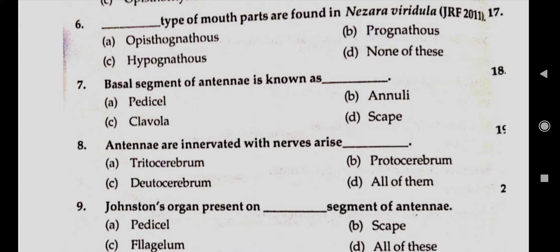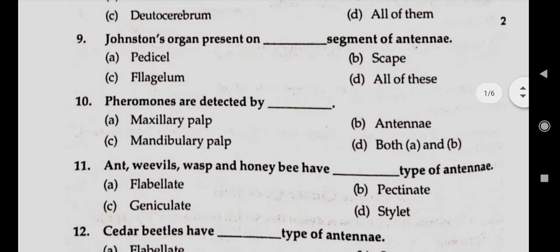Question number six: dash type of mouthparts are found in Nezara viridula. Answer A, opistognathous. Question number seven: basal segment of antenna is known as answer D, scape. Question number eight: antennae are inverted with the nose arising. Answer is C, due to cerebrum. Question number nine: Johnston's organs present on dash segment of antenna — very important. Answer A, pedicel.